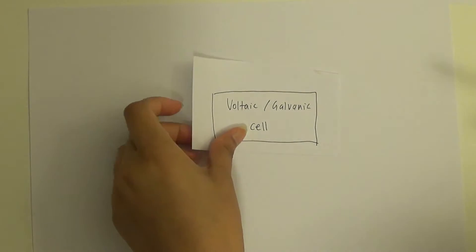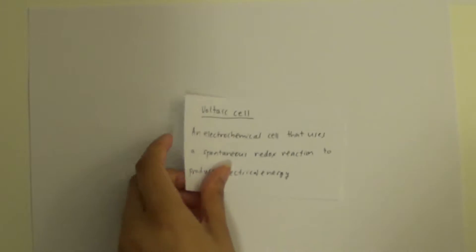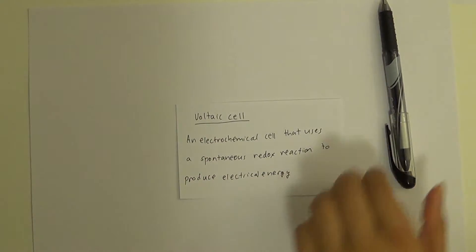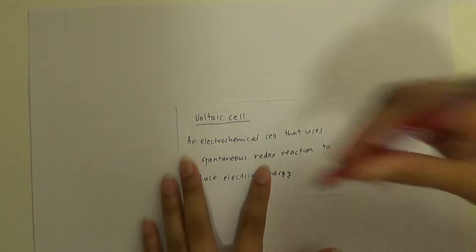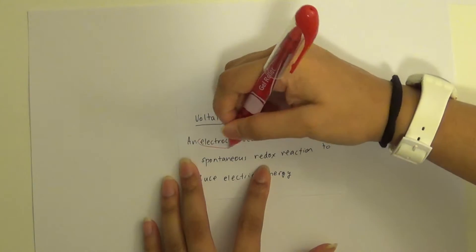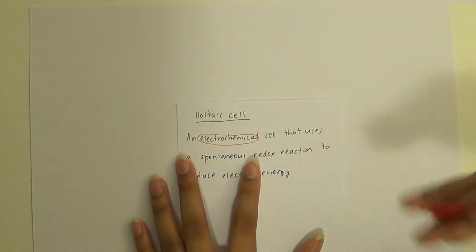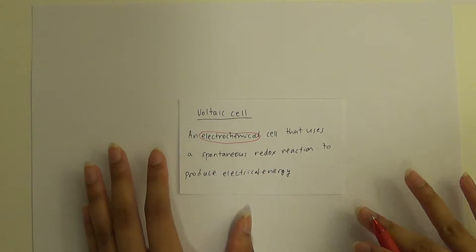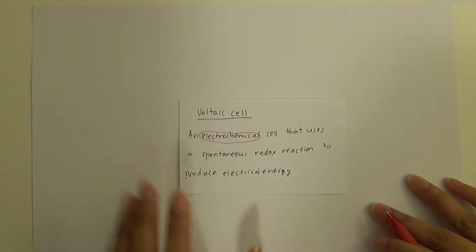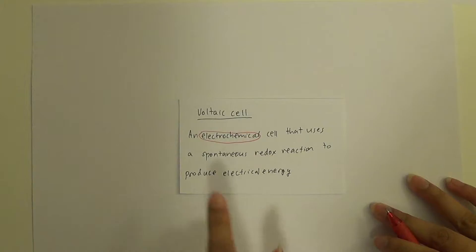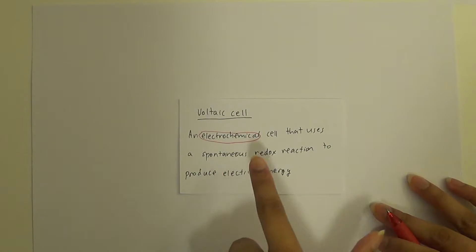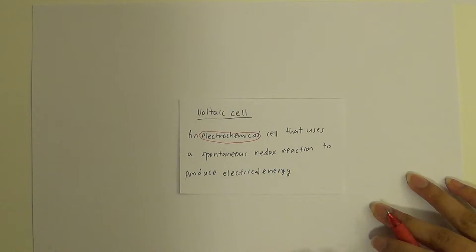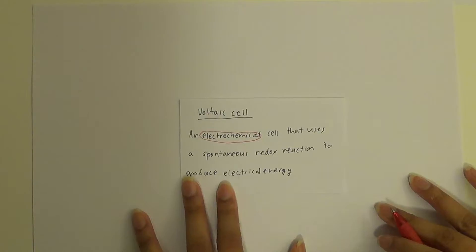So let's firstly look at what a voltaic cell is. A voltaic cell is an electrochemical cell, and that basically means it's used to generate electrical energy — for example, to light up a light bulb or something. It uses a spontaneous redox reaction to generate this electrical energy.